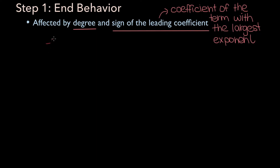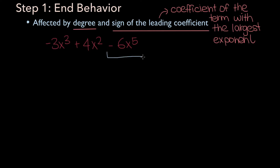Let's say we have the polynomial minus 3x cubed plus 4x squared minus 6x to the fifth. If we wanted to find the leading coefficient of this polynomial, we would look for the term with the largest exponent, which is minus 6x to the fifth in this case, and the coefficient of this term is minus 6.